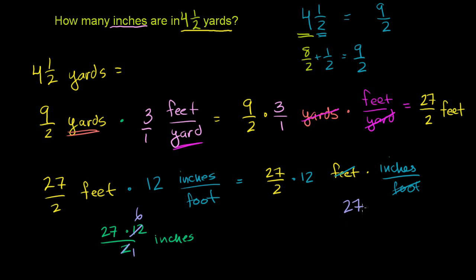27 times 6. 7 times 6 is 42. 2 times 6 is 12. Plus 4 is 16. So it's equal to 162 inches. Which makes sense. 4 and 1 half yards. That gets us to this number right here. 27 divided by 2 is 13 and 1 half feet. You multiply that by 12, it makes sense. You're going to have a bunch of inches. 162 inches.